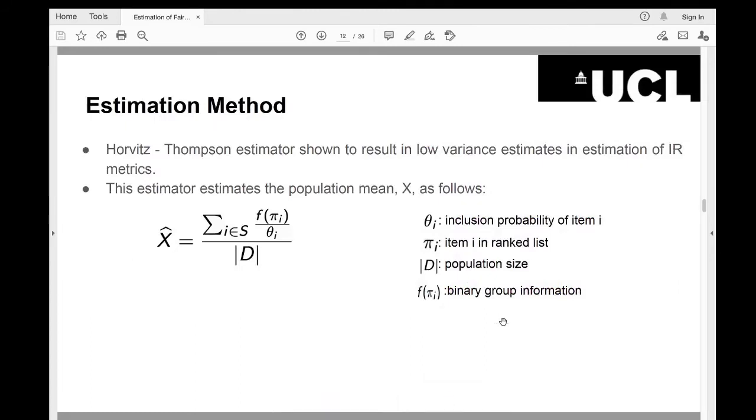After having sampled set of items, we use Horvitz-Thompson mean estimator to compute desired fairness metrics. But first, let me explain how Horvitz-Thompson estimator works. Suppose we want to compute the population mean x as x hat. Here, f of pi i is a function of item i in population, in our case in ranking pi. Theta i is the probability of an item i being included in sample set S. And d is the population size. In our case, it's a ranking size.